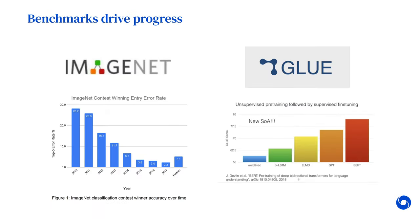Getting this right is important, because we know challenging benchmarks with large data sets drive progress in machine learning across many domains. For example, ImageNet in computer vision, and GLUE in natural language processing. In contrast, a lack of clear benchmarks has hindered similar progress for RL in real-world applications. This paper aims to correct this, to facilitate collaborative research and measurable progress in the field.